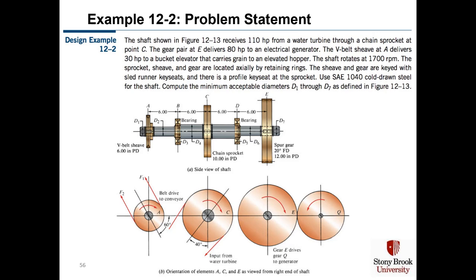Let's analyze this situation. We're given rpm and three horsepower values, and we need to calculate the three torque values at A, C, and E. The torque comes in at C in the middle of the shaft and is distributed to the left at A and to the right at E, which means torque will be present at all locations in the shaft.